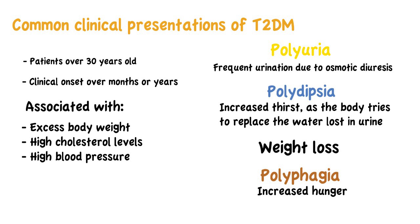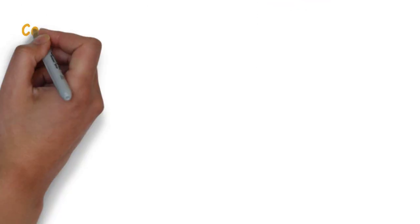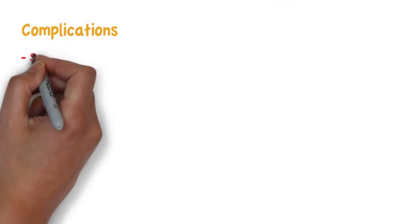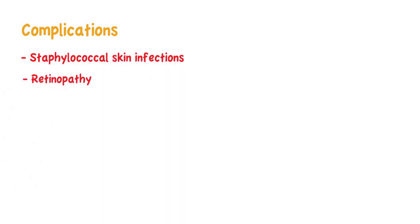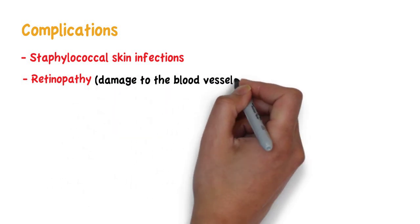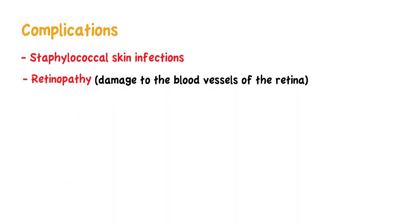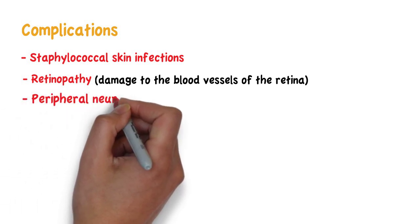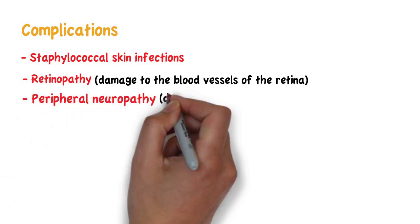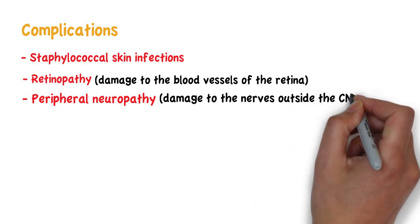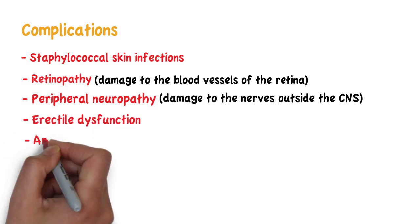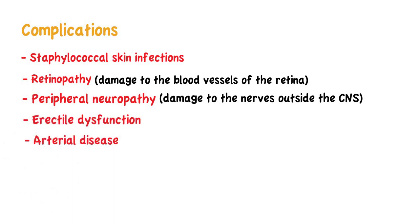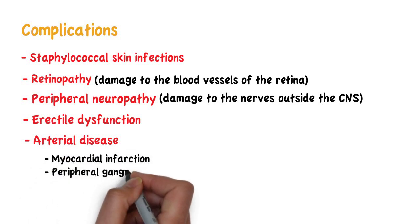It is common for type 2 diabetes patients to present with complications such as staphylococcal skin infections. Retinopathy, which is damage to the blood vessels of the retina, causing patients to present with blurred vision. Peripheral neuropathy, which is damage to nerves outside the central nervous system, causing tingling and numbness of the feet. Erectile dysfunction, and arterial disease resulting in myocardial infarction or peripheral gangrene.